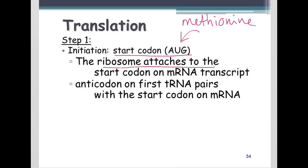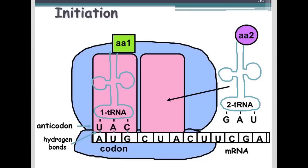During initiation, the ribosome attaches to the start of the mRNA transcript, and the anticodon on the very first tRNA pairs with the start codon on the mRNA. So, here we see our very first tRNA. We have our start codon, and look, the anticodon matches perfectly with the start codon, and it has our very first amino acid attached. Once we're there, second amino acid will want to come into the A site. Remember, this is the A site, and this is the P site.